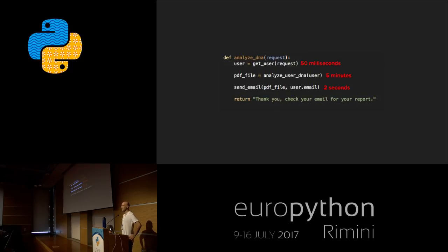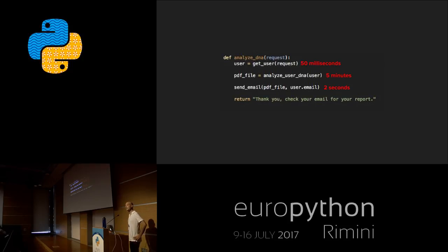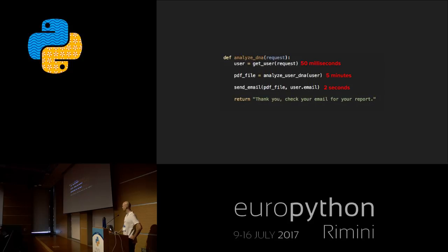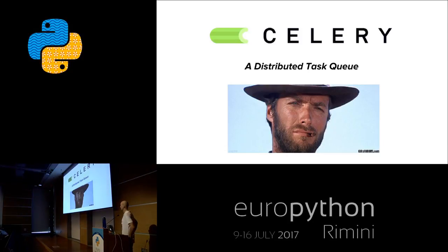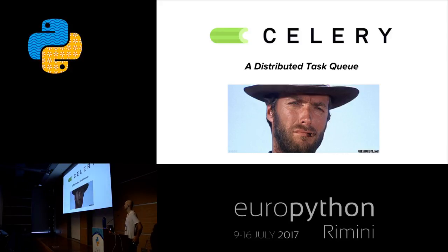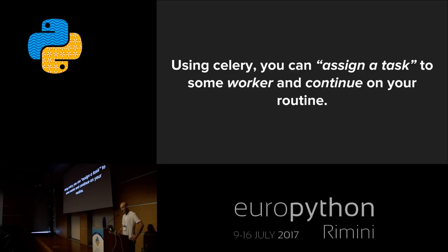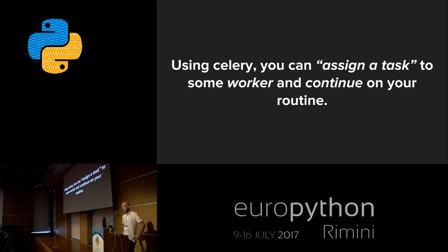So what if these two heavy functions could be taken out of our request handler? What if there were a way to give these two functions to someone else — another process — some time later, and continue our routine and display the thank-you message? In that case, we would get rid of the heavy functions and give the thank-you response to the user in just 50 milliseconds. And this is where Celery arrives. When you have a function you want to outsource, Celery comes to your help. Using Celery, you can assign a task to a worker and continue on your routine.